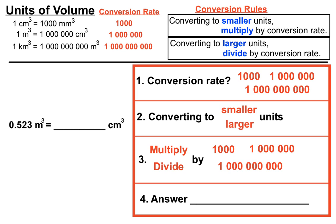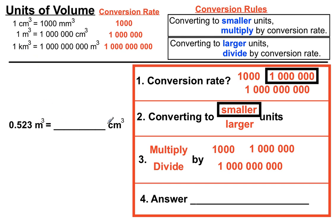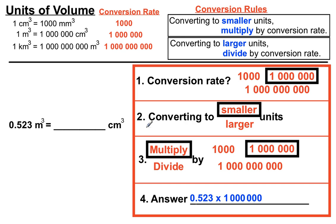Now we're moving from m³ to cm³. That uses the conversion rate of a million. We're converting into cm³, which is smaller than m³, so we multiply by a million. That moves the decimal point six spots — best done on a calculator. The final answer is 523,000 cm³ in that 0.523 m³.